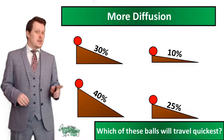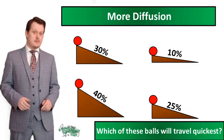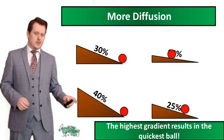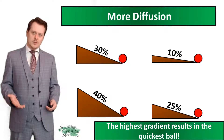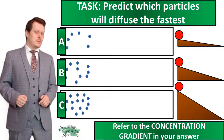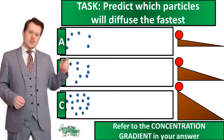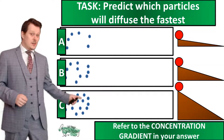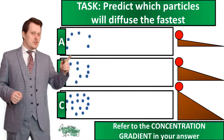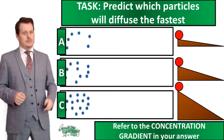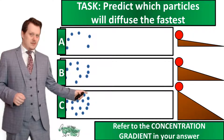Let's talk a little more about diffusion and how it can be affected by the concentration gradient. If I asked you which ball gets to the bottom of its hill first, you'd say the one with the steepest gradient — the highest gradient results in the quickest moving ball. The same is true for diffusion. Particle set A has the lowest concentration, C has the highest, and B is in between. A has the smallest difference in concentration between front and back of the room, while C has the largest difference.